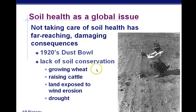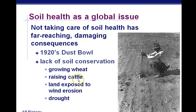Soil health is a global issue. During the 1920s and early 30s, we had the Dust Bowl. We didn't have soil conservation. We were growing wheat and raising cattle, and the cattle ate all the crops that held the soil in place — roots of plants actually hold the soil in place. We also had a drought, lack of water, and a lot of wind blowing away all the topsoil.